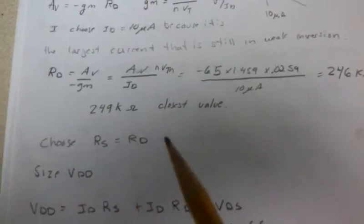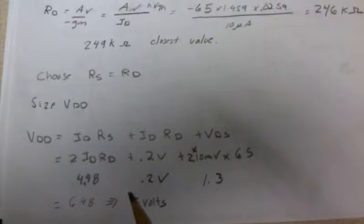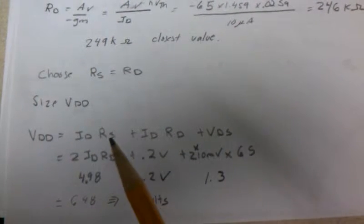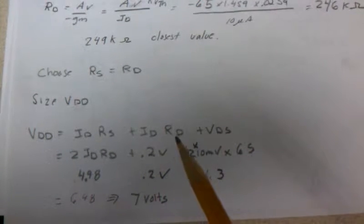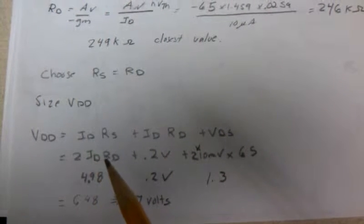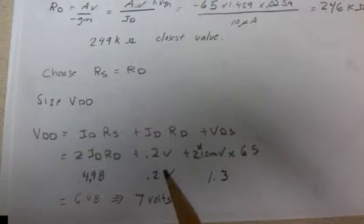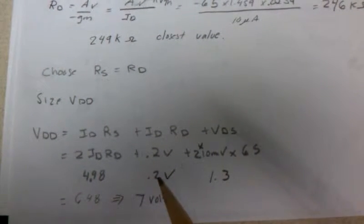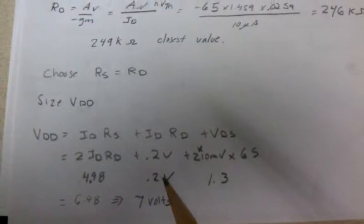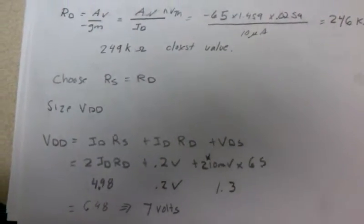I choose RS equal to RD, then I solve VDD in a way we've done many times before. We have the voltage drop across RS, across RD, and VDS. Since RD equals RS that's just multiplied by a factor of two. That's the minimum voltage to be in the constant current source region of a MOSFET, and this takes into account the gain. I rounded up to 7 volts.